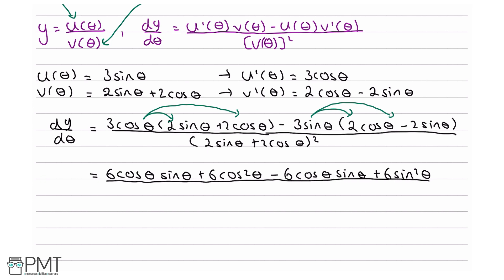The denominator is v(θ) squared, which is (2 sine theta + 2 cosine theta) squared. Expanding: 2 sine theta squared gives 4 sine squared theta, 2 cosine theta squared gives 4 cosine squared theta, and the cross terms give 4 cosine theta sine theta plus 4 cosine theta sine theta.